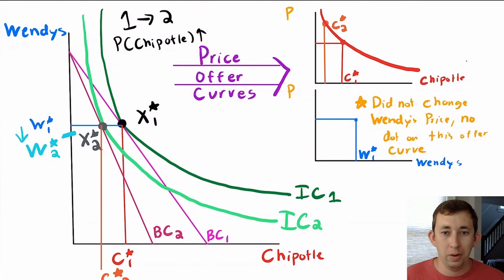There are a lot of curves going on here. We've got two indifference curves, two budget constraints, and two preferred bundles where subscript 1 indicates before I change prices and subscript 2 is after I've increased the price of Chipotle.